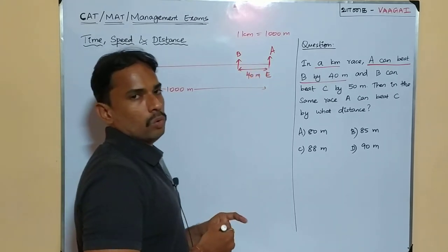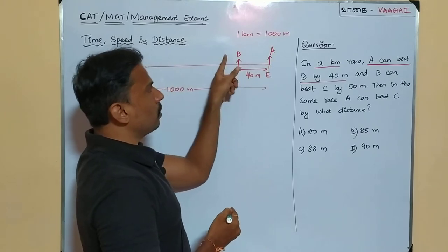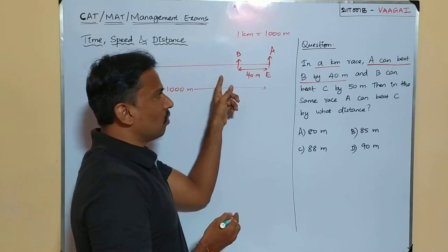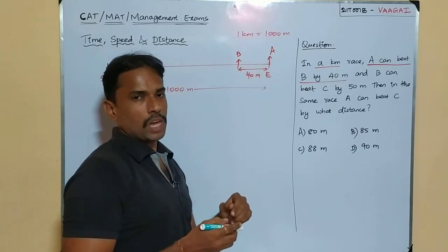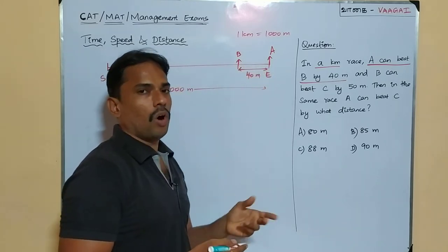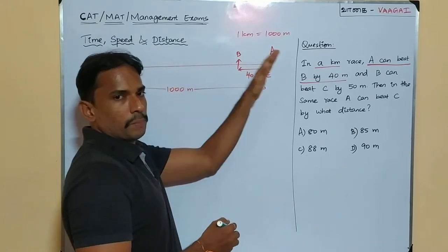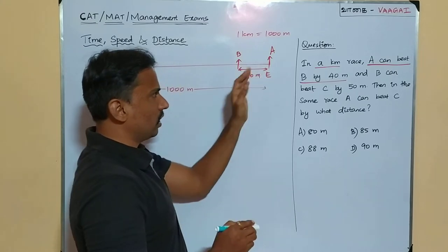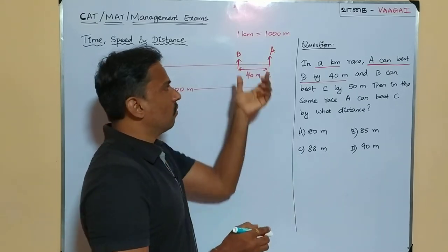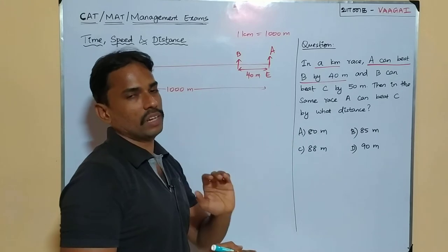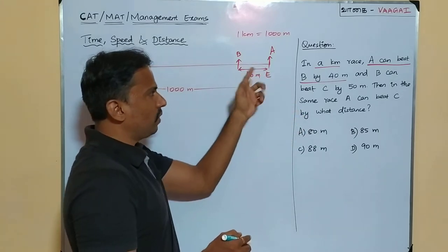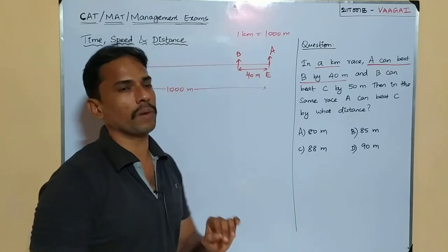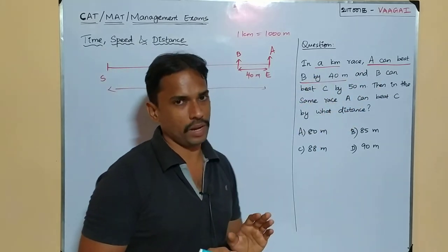So, A beating B by 40 meters means: when A is about to finish the race, A is 40 meters ahead of B. Equivalently, B is 40 meters behind A. The gap between them at the moment A finishes the race is 40 meters. That is the meaning of 'A beats B by 40 meters'.